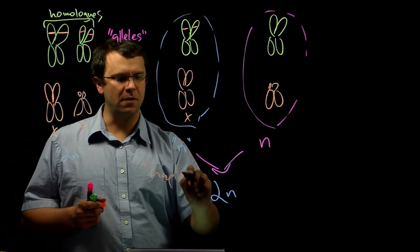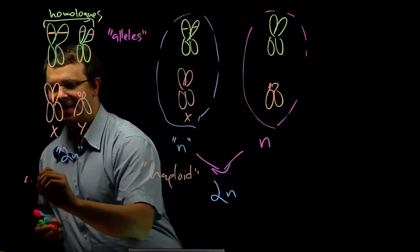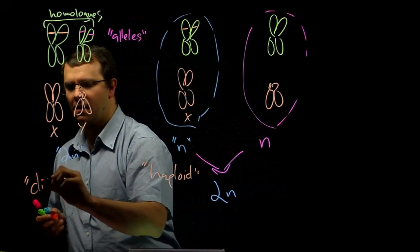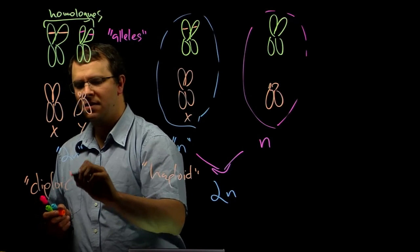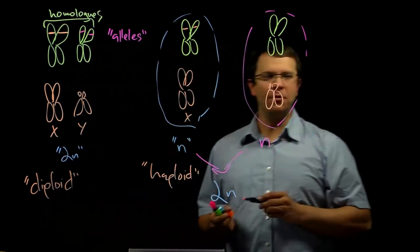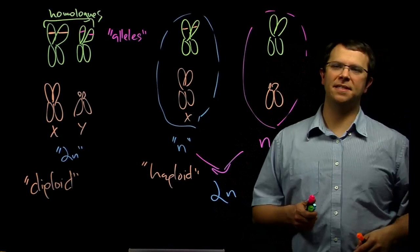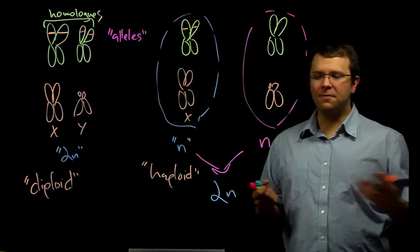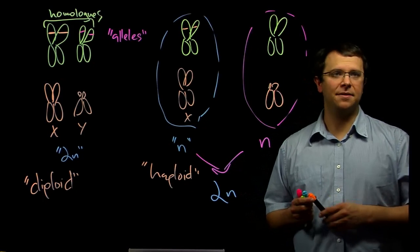we call haploid. And the cells that have two full sets of chromosomes, we call diploid. And meiosis is the process of producing haploid cells from diploid cells. And so next, we're actually going to dig into the details of that process.